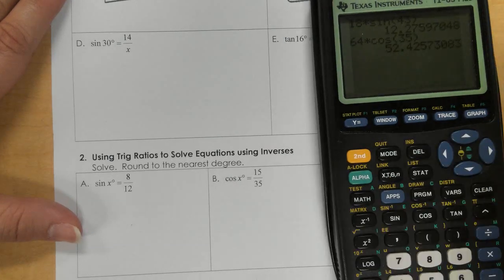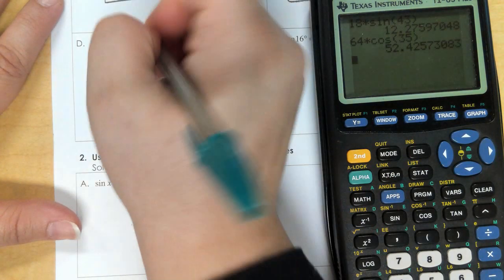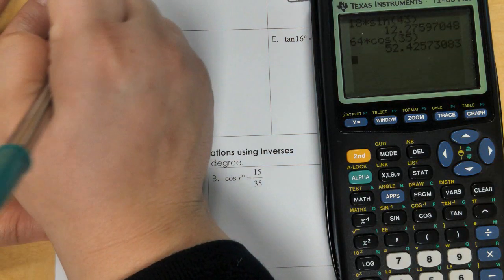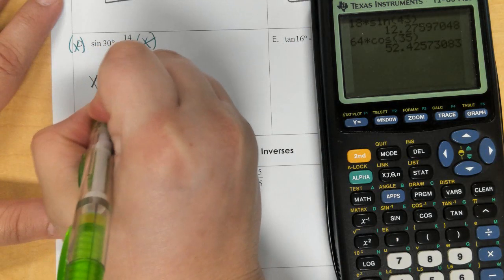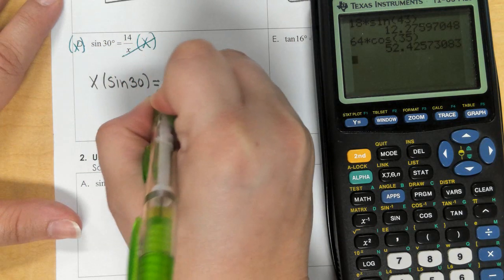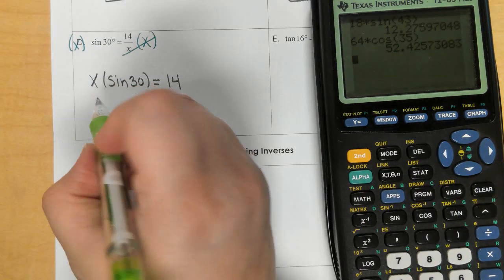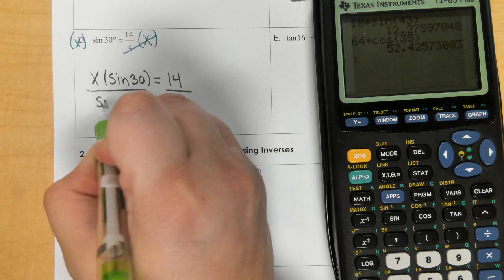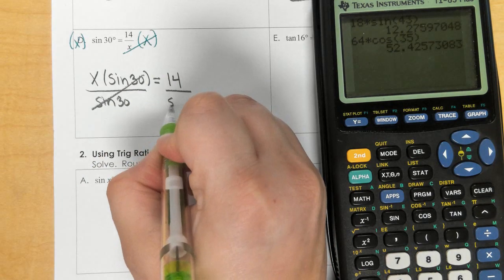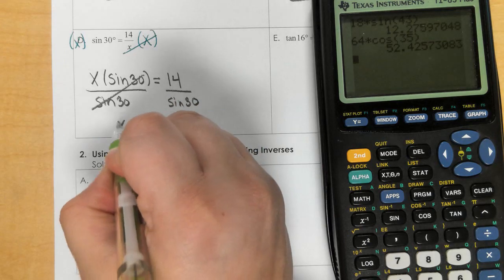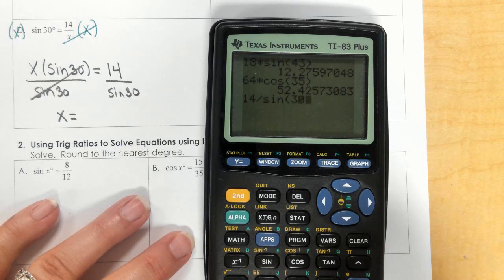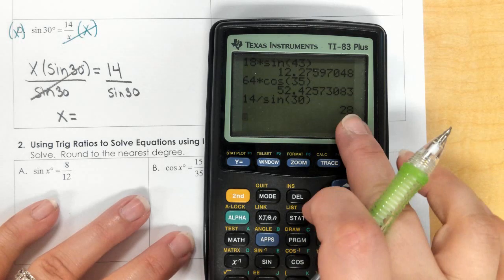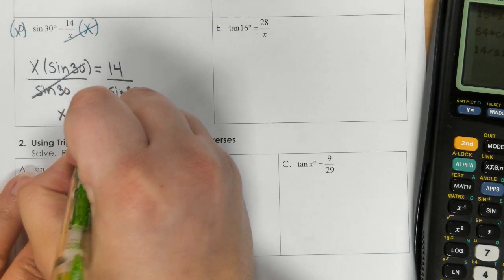Okay, for letter D, to get rid of my denominator, I multiply both sides by x. And we get x times sine of 30 equals 14. So now, we divide both sides by sine of 30. And x would be 14 divided by sine of 30. And that gives me 28 degrees. Or sorry, just 28 side length.